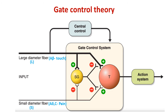The T cell is the pain afferent to the action system or central nervous system. The SG, shown here in yellow, is the substantia gelatinosa. Some neurons of the substantia gelatinosa act as inhibitory neurons and act on both large and small diameter fibers which lead to the T cell — the pain afferent to the central nervous system.